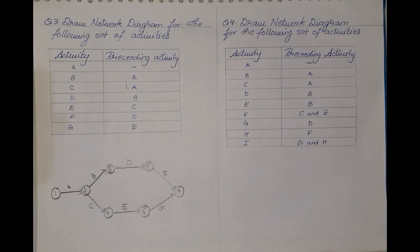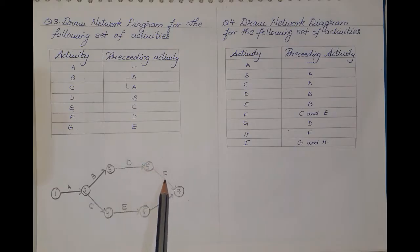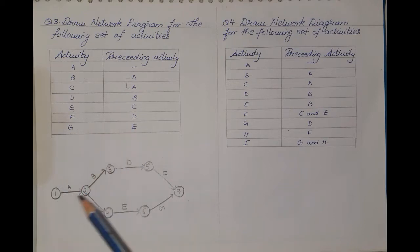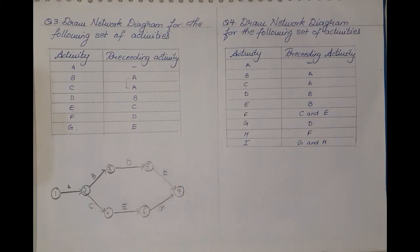Always remember in a network diagram where the diagram is not closing down — in the previous two sums it used to always close to one single activity — here the sum didn't close down naturally, so at the end we need to close it into a complete network diagram. This was question number three, in which the last activities do not merge on their own, and this is how we solve such a sum.